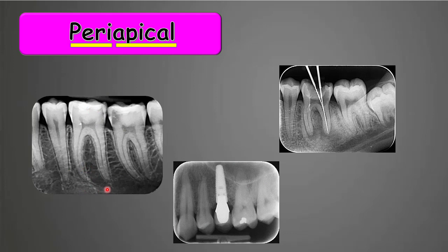Periapical radiography is used to detect caries, to diagnose inflammation at the apex of the tooth, or for root canal therapy — we can use it to detect the canal and its length. It's also used for follow-up radiography after implant surgery.